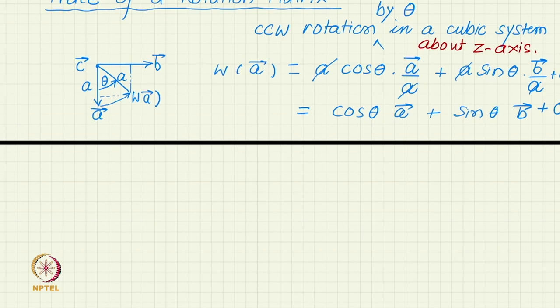We get the components of the transformed vectors are cos theta, sin theta and 0. You have the first column of your matrix as cos theta, sin theta, 0.